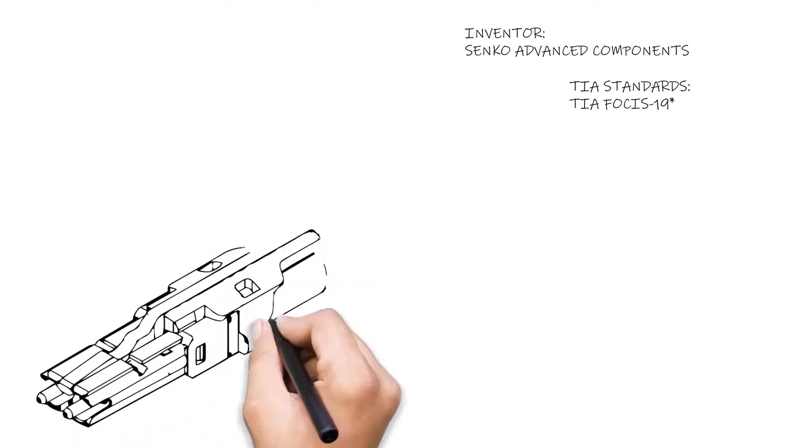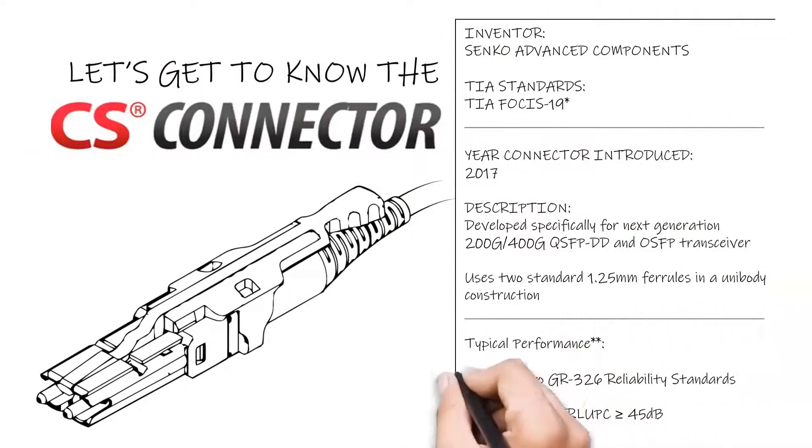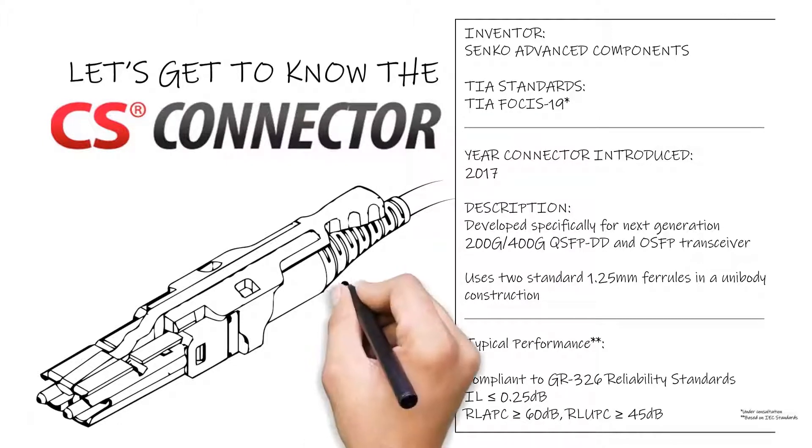The CS connector was first released in 2017 and is a unibody connector designed to house two 1.25mm ceramic ferrules. These are the same ferrules used in an LC connector, which will guarantee excellent optical performance and easy maintenance.